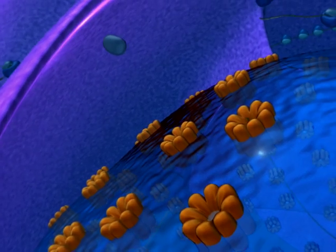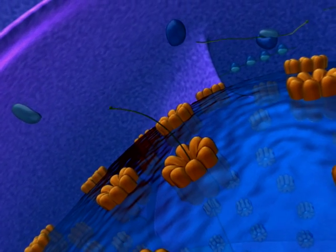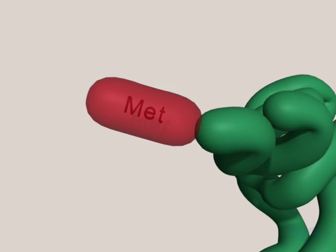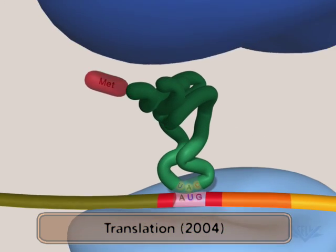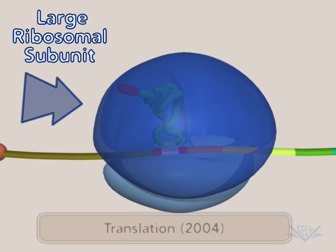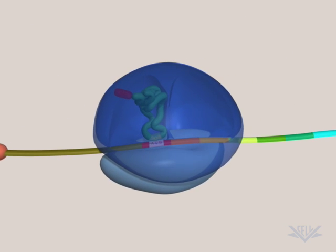If we follow the final mRNA products out of the nucleus, we can see them in action during the process of translation. Here, you can see a particulate organelle called the ribosome. It is partially composed of the rRNA we just spoke of.